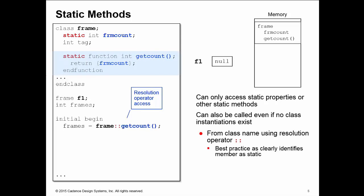And there's two ways of doing this. The first way of doing it is to call it using a resolution operator which is the double colon from the class name. So frame colon colon getCount calls the static method getCount of the frame class without there being an instance of frame in existence. And this returns the value of the static property frame count. And this is best practice because it clearly identifies that method as being static. The other way of doing it of course is by calling it from a class handle.